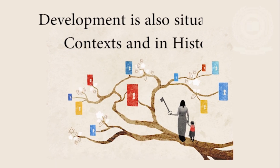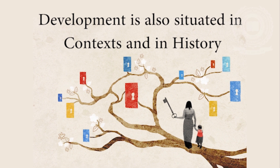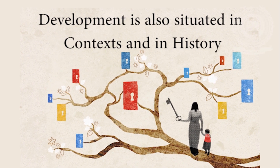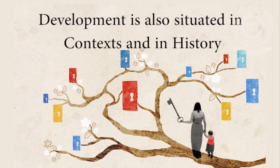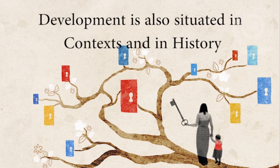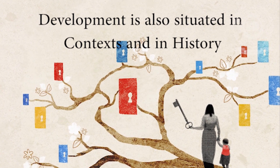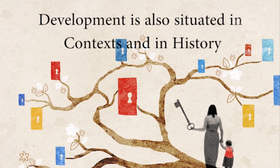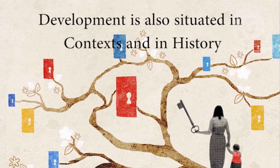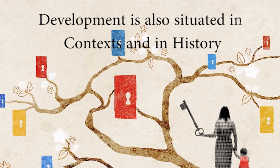The sixth principle states that development is also situated in context and in history. Development varies across the different contexts in which we live our lives. For example, social and rural environments are associated with different sets of factors which have the potential to impact development. Development is also historically situated — that is, the historical time period in which we grow up affects our development.